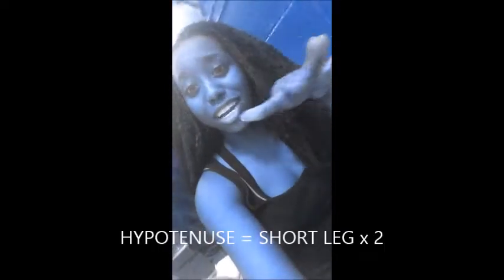Then there's 30, 60, 90 — I'm telling you this will make it better. Hypotenuse is the short leg times 2. And the long leg equals short leg times root 3.